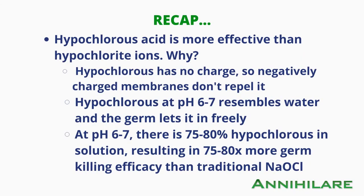As a recap: hypochlorous acid is more effective than hypochlorite ions. Why? Hypochlorous has no charge, so negatively charged membranes don't repel it. Also, hypochlorous at pH 6 to pH 7 resembles water, and the germ lets it in freely. Lastly, at pH 6 to pH 7, there is a 75 to 80 percent concentration of hypochlorous acid in solution, resulting in 75 to 80 times more germ-killing efficacy.